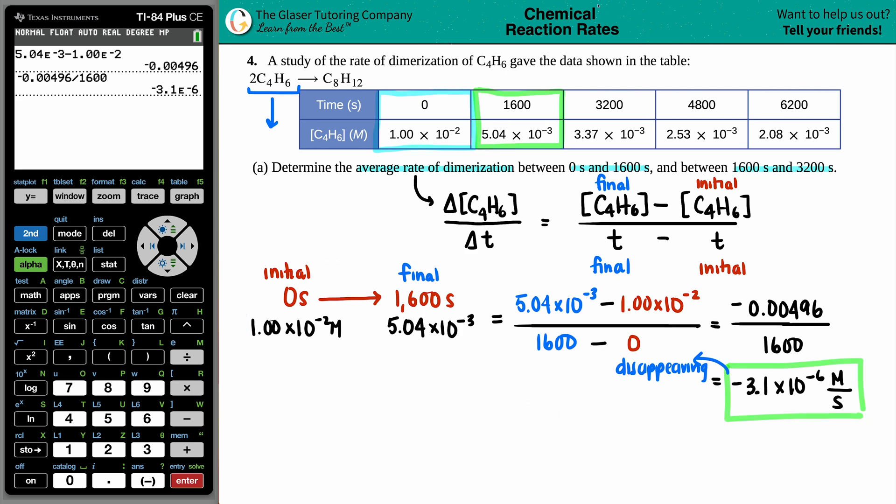So now, we just have to do the same thing for the second bit of data. 1,600 seconds all the way to 3,200. Well, we have the 1,600 data already. That's the 5.04 times 10 to the negative 3rd molarity. And now, the 3,200 is going to be 3.37 times 10 to the negative 3rd molarity. Okay. Your initial now is the 1,600 seconds. And your final is the 3,200. Final minus initial.